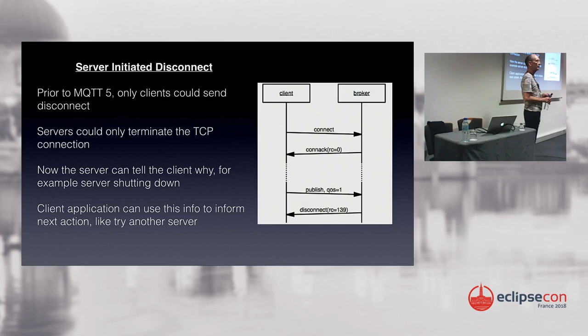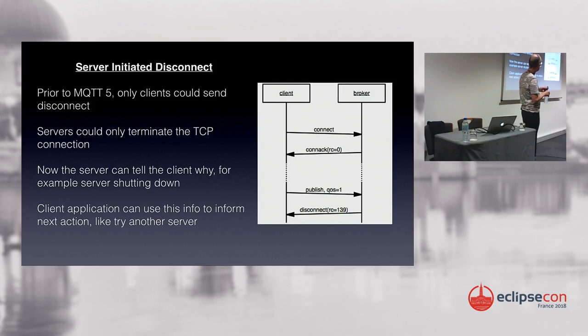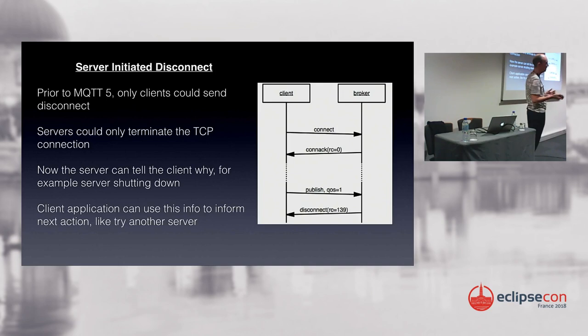In version 3.1.1, if a server wanted to get rid of clients — for example, shutting down — the only recourse it had was to close the TCP connection, leaving the client wondering why connectivity was lost and whether to retry immediately or wait. In version 5, the server can send a disconnect packet telling the client exactly what the situation is. It can say 'I'm shutting down — don't try for another 30 minutes until I come back up.'